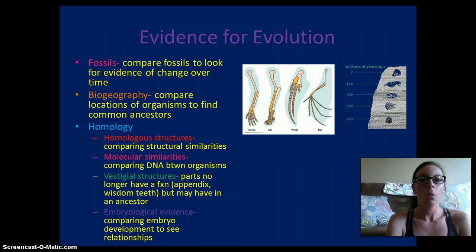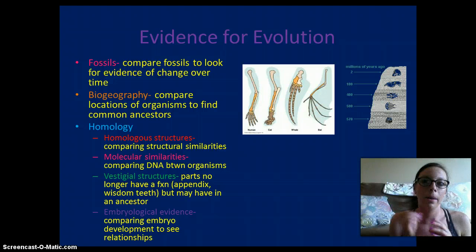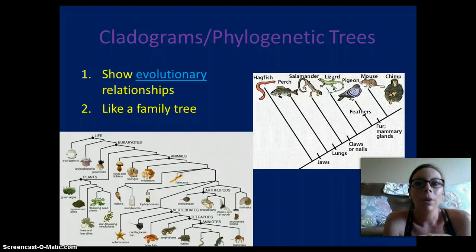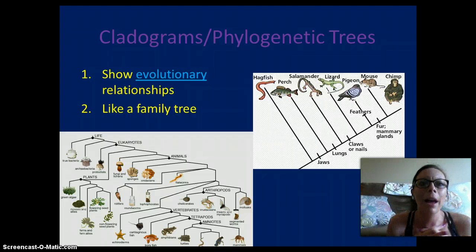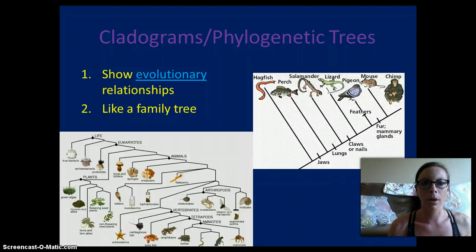Embryological evidence shows that when we look at embryos, they look very, very similar from organism to organism — from a turtle to a human to a frog to a bird — we're all very similar in the embryonic stage, providing some DNA evidence. A cladogram is a graphic that shows evolutionary relationships, like a family tree. Organisms on the same branch are more closely related, and the further apart the organisms, the further they are in relation.